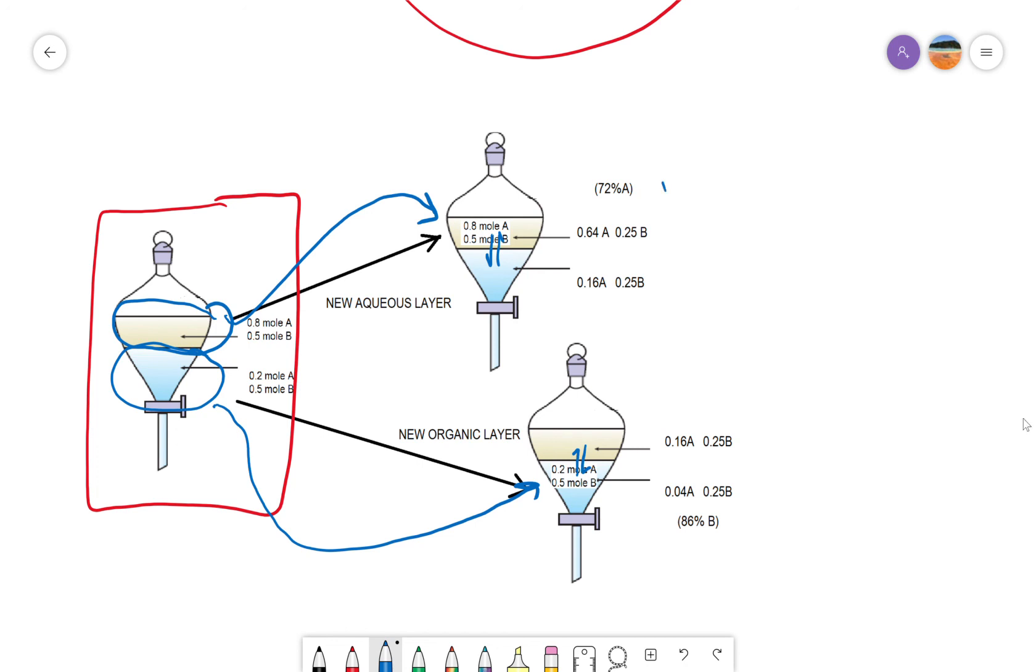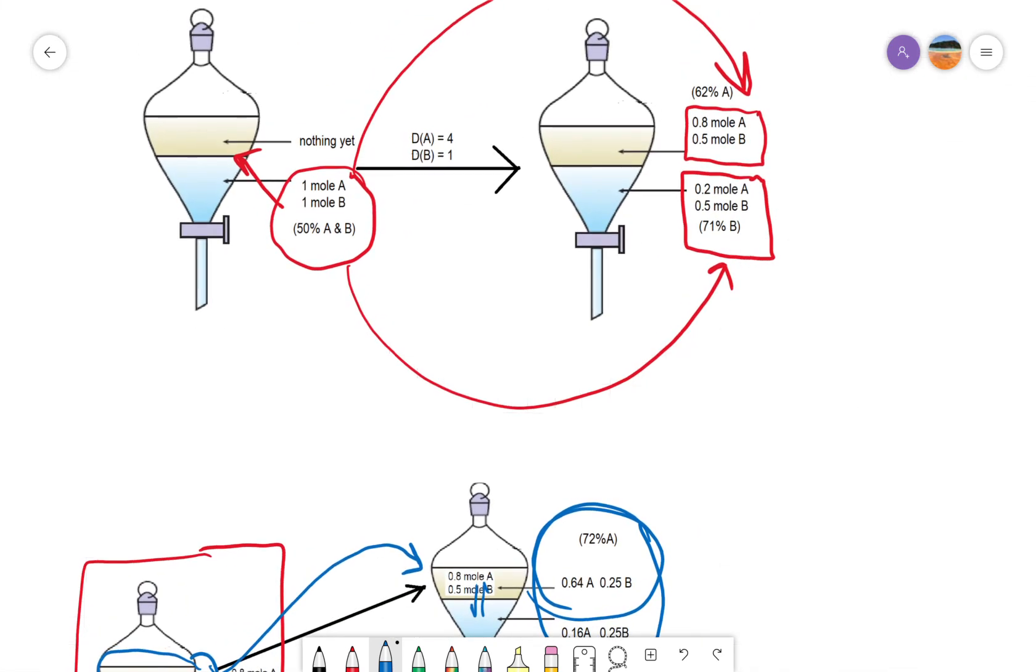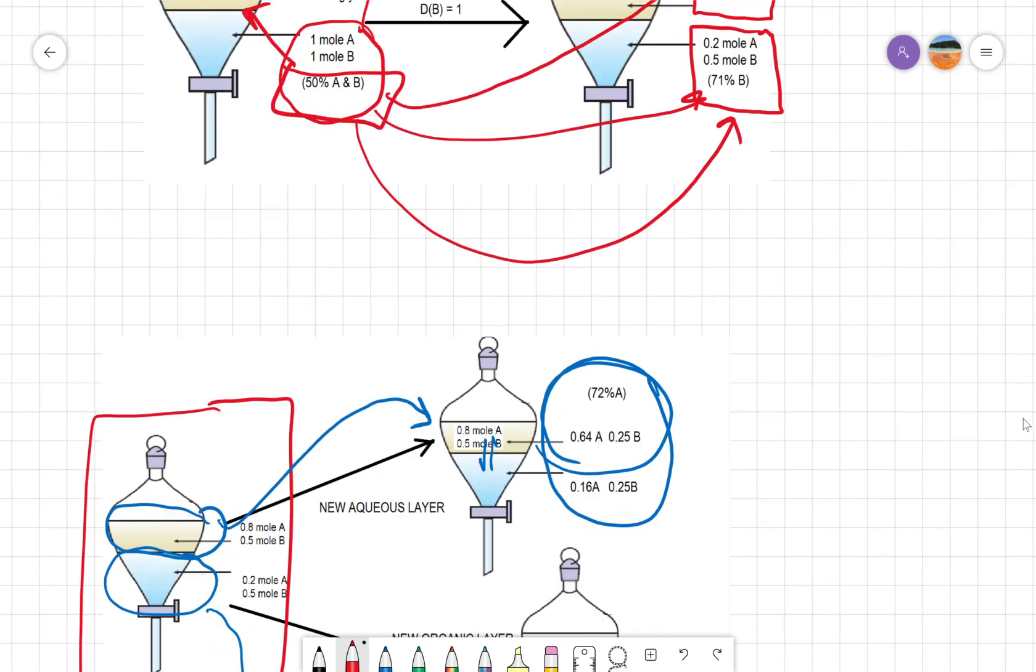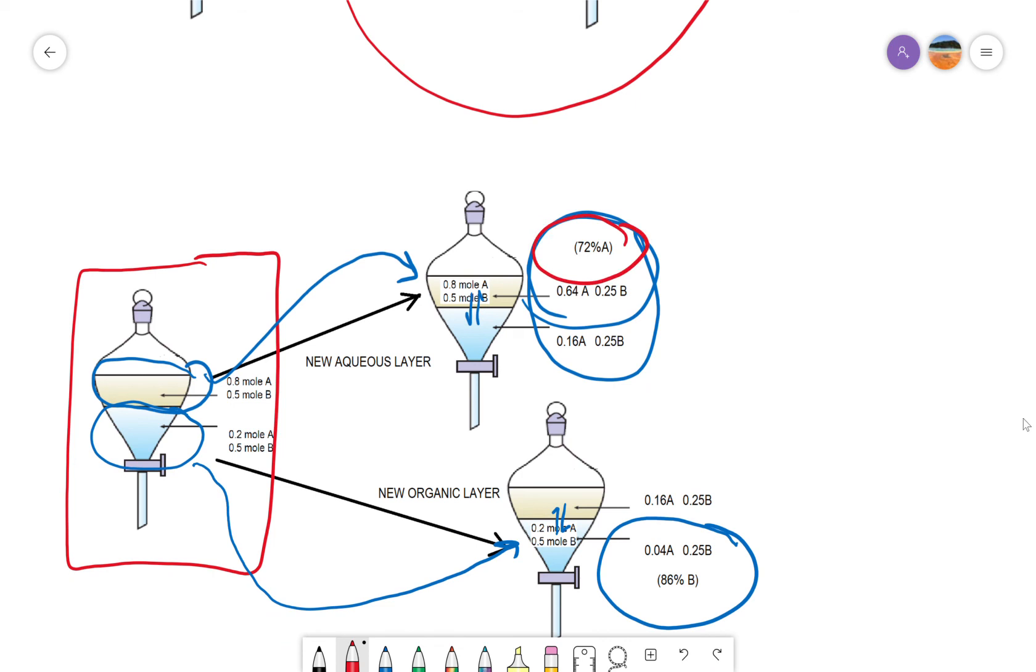After our second extraction, the upper layer of A would be 72% A and the lower layer in the second flask would be 86% B. Notice that we've gone from 50-50 after one extraction to 62% and 71%. And after two extractions, we have now gone to 72% and 86%. So, every time you do an equilibrium, you get it a little more pure.